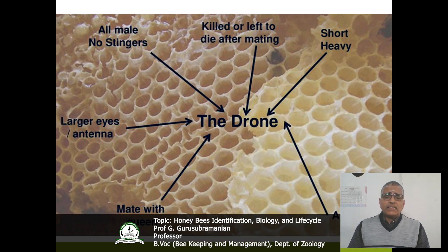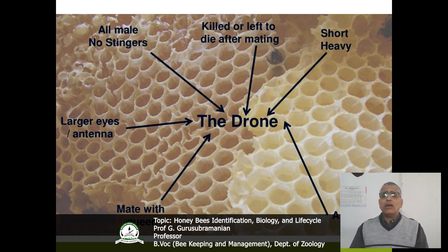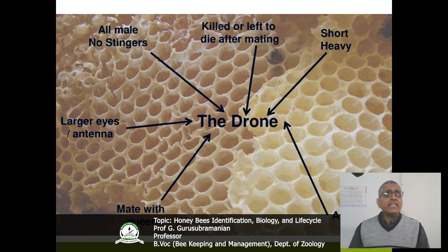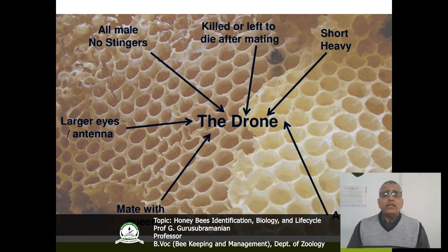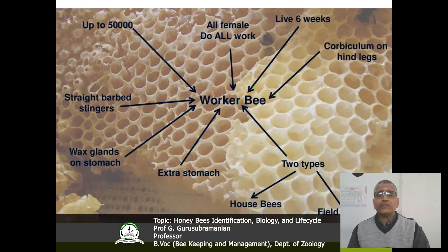The second caste form is the drone or male. All males do not have any stings. They have larger eyes and antennae. They are killed after mating. This is the characteristic feature of the drone.